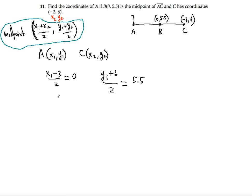So we solve each equation individually now, multiplying both sides by 2. It gets rid of the 2s, and we can work simultaneously on both equations. We will get x1 minus 3 equals 0, and y1 plus 6 equals 11, and 5.5 times 2 is 11. So x1 equals 3, and y1 equals 11 minus 6, which is 5.